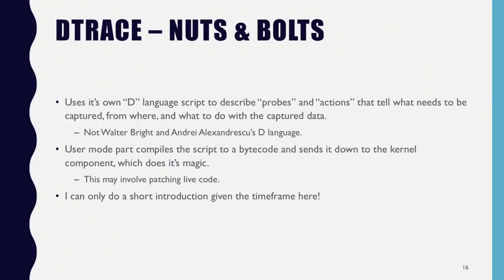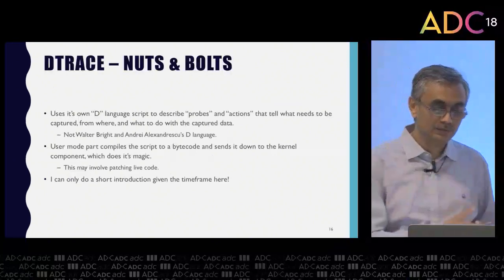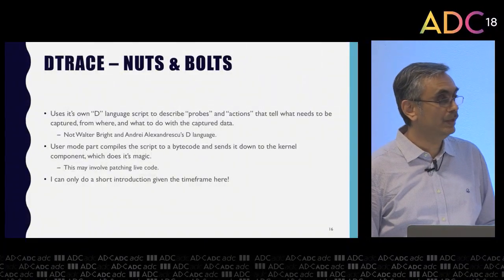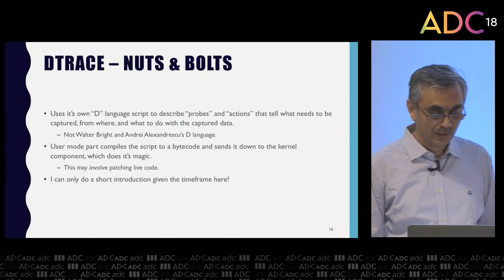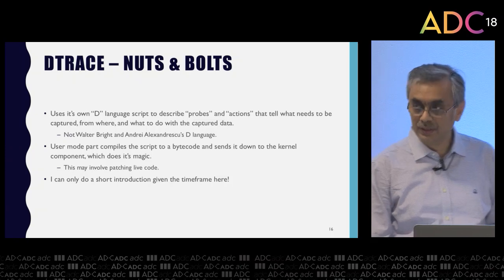Let's talk about some nuts and bolts. dtrace uses its own D language script to describe what are called probes and actions — these tell what needs to be captured from where and what to do with the captured data. This is not Walter Bright's D language. The user-mode part of dtrace compiles these scripts to bytecode and ships it down to the kernel. The kernel part actually does most of the magic — this may involve patching live code.